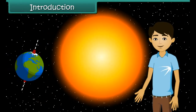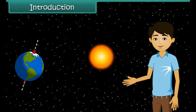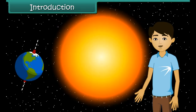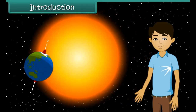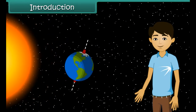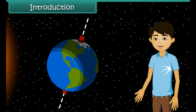Hello students, can you imagine how cold the earth would be if there were no sun? The sun is the earth's main source of heat. Only a little of the sun's heat reaches the earth; however, this is enough for life to exist on earth.